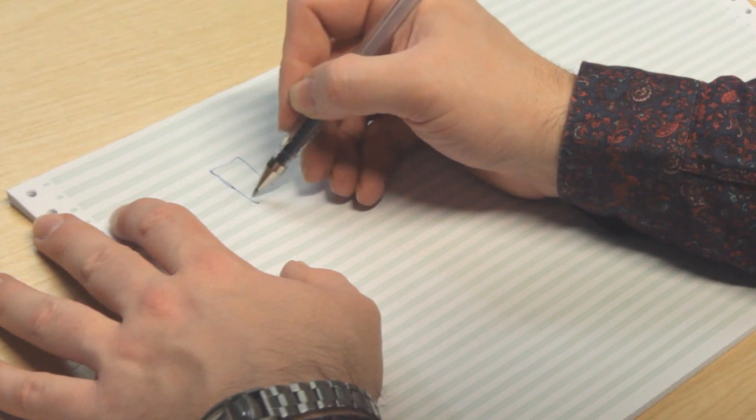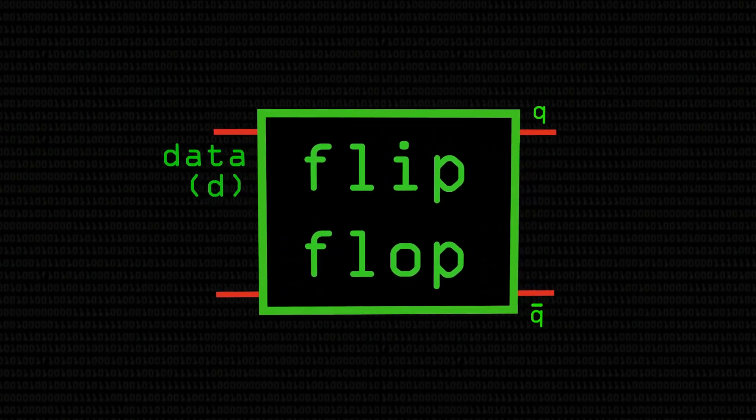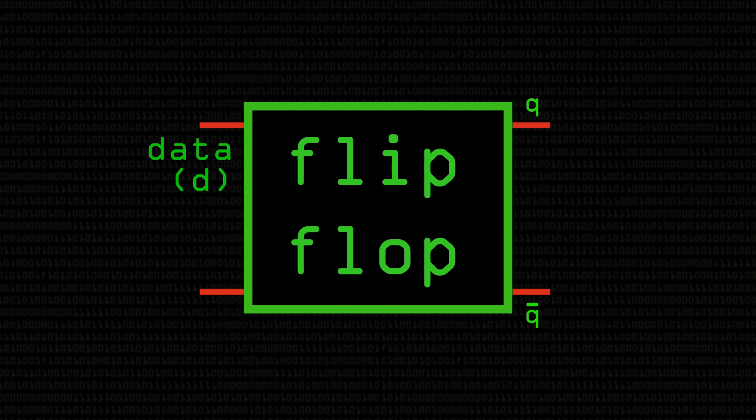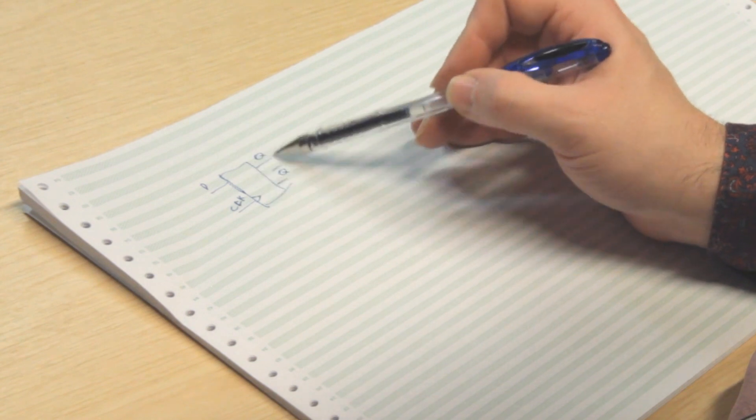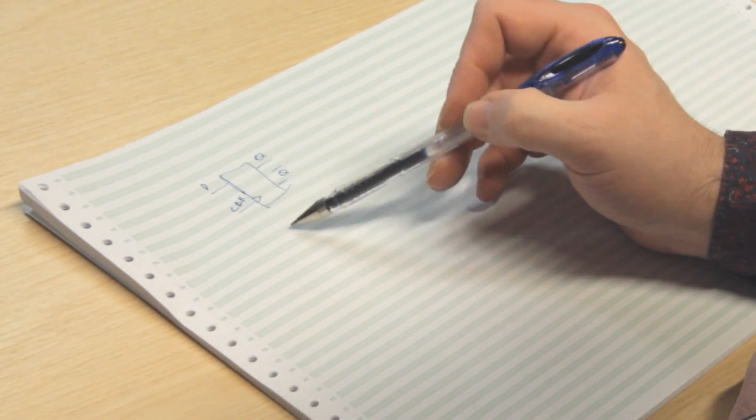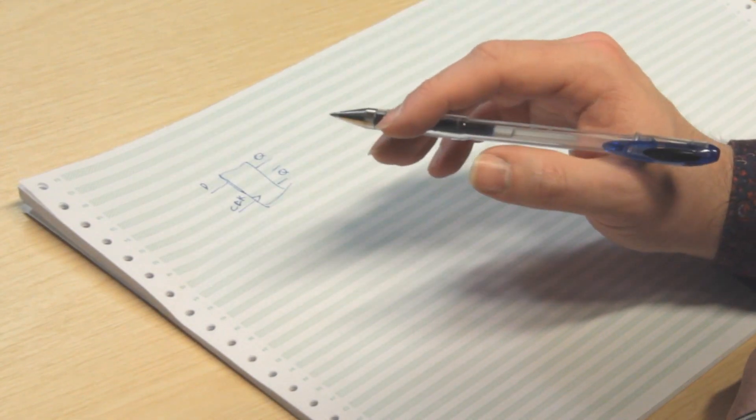So I'm just going to use the flip-flop symbol that we had before to represent it. So we've got our data input, which we'll call D, we've got our output Q, we've also got the inverted Q output, and we have our clock input as well that we can use to tell it to store it. So whatever's on the input is stored in the flip-flop and goes to the output when we take this low and then take it high again, or vice versa, depending on how it's actually built.